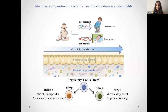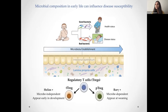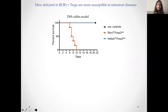When these subsets were identified, the question that came to mind was: why do we need different subsets in the intestine, and do they have different functions? To address that, we generated mice deficient either in the Helios-positive Tregs or in the RORγ-positive Tregs, and subjected them to different intestinal inflammation models. One of the first things I did was to treat these mice with DSS, a chemical that leads to severe intestinal inflammation, commonly used in the intestinal biology field, called DSS colitis.